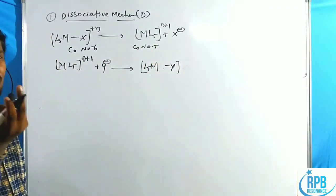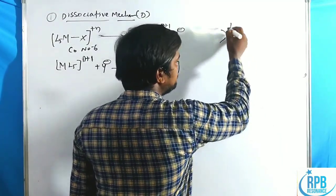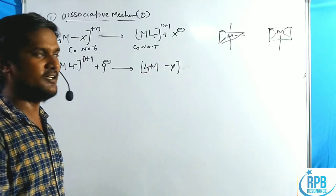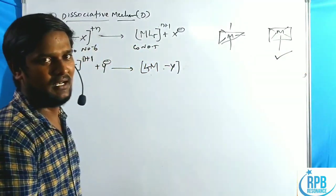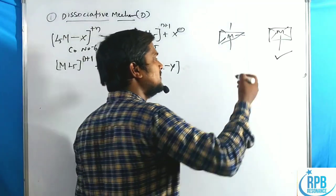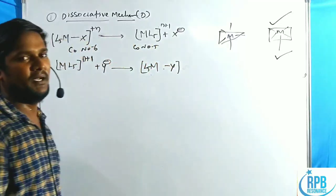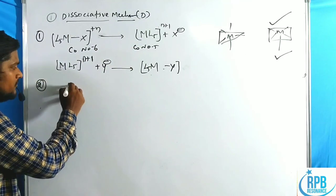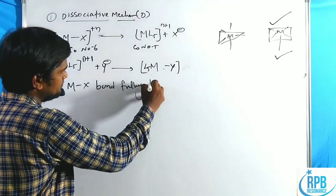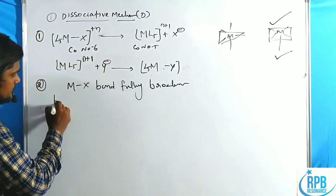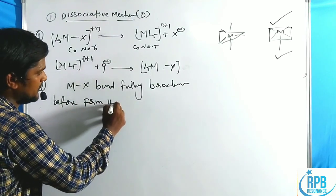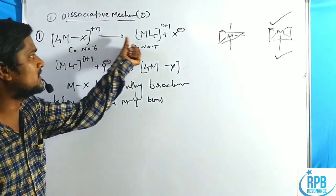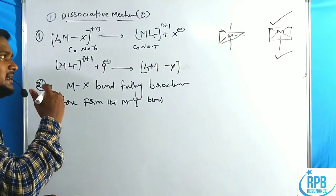When coordination number decreases from 6 to 5, two possible geometries exist: trigonal bipyramidal and square pyramidal. According to activation energy studies, square pyramidal is more predominant than trigonal bipyramidal. Therefore, most substitution reactions proceed through a square pyramidal intermediate. Importantly, in the dissociative mechanism, the MX bond is fully broken before the MY bond is formed.